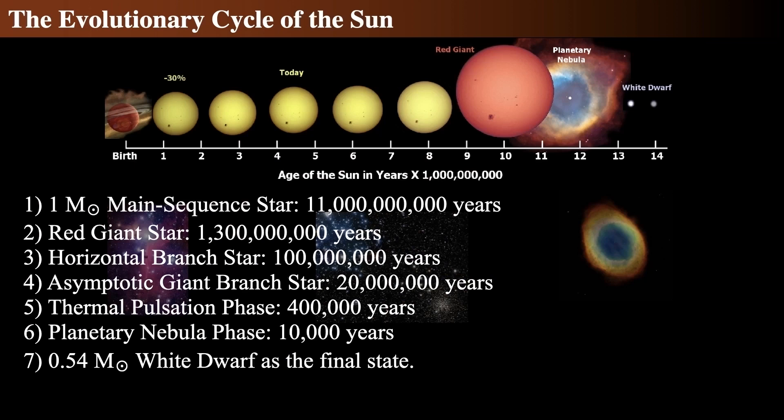So the evolutionary cycle of the sun follows the graphic across the top. For about 10 or 11 billion years, the sun is a main sequence star. Then for about one and a quarter billion years, it's a red giant, where it grows to be roughly the size of Earth's or Mars' orbit.